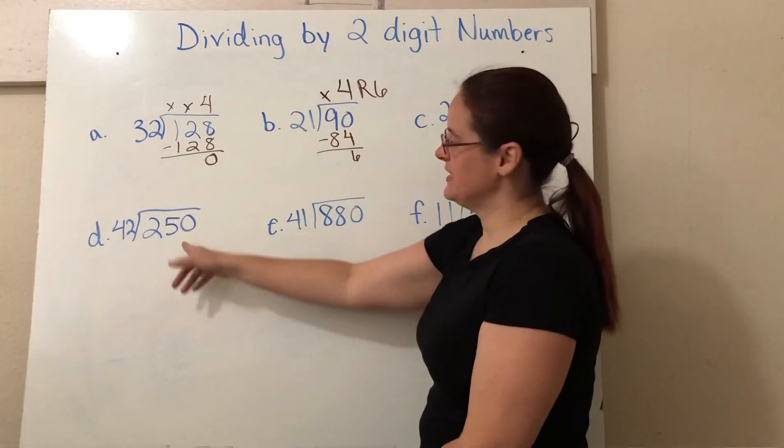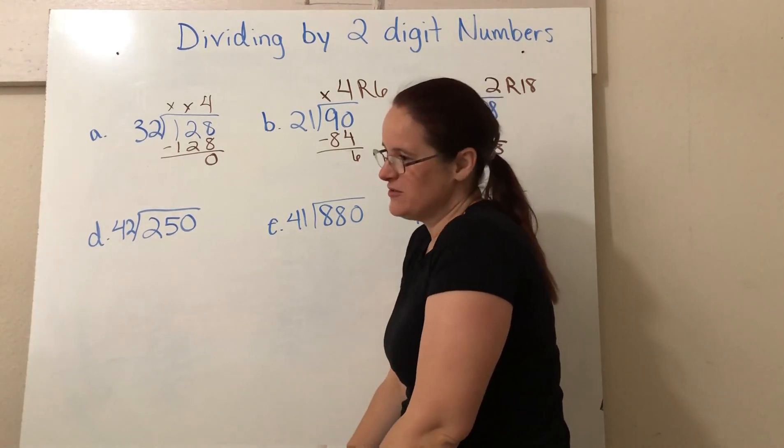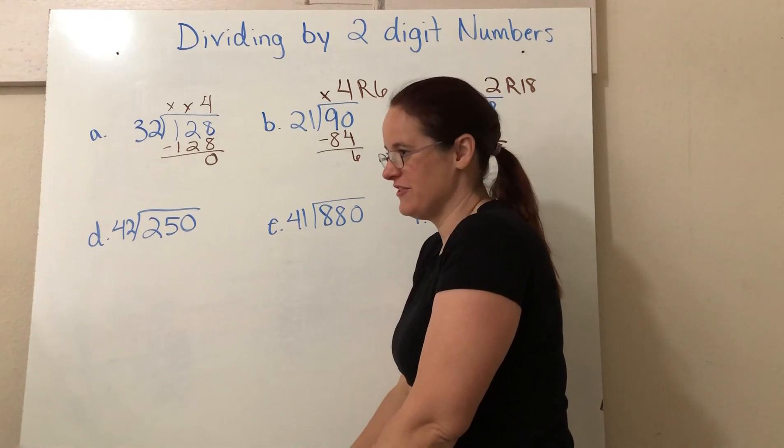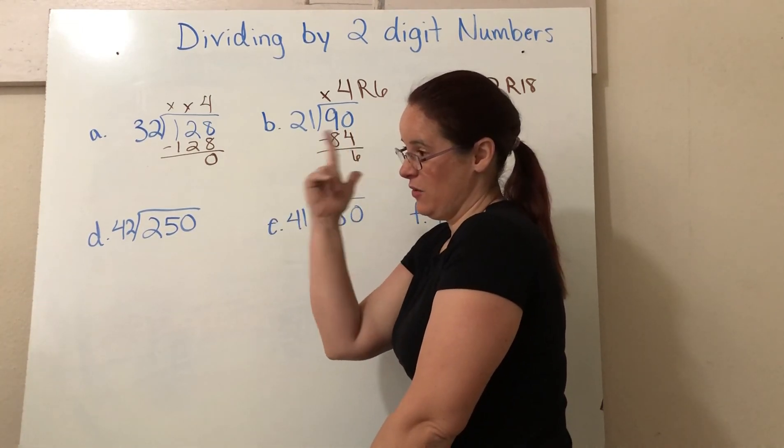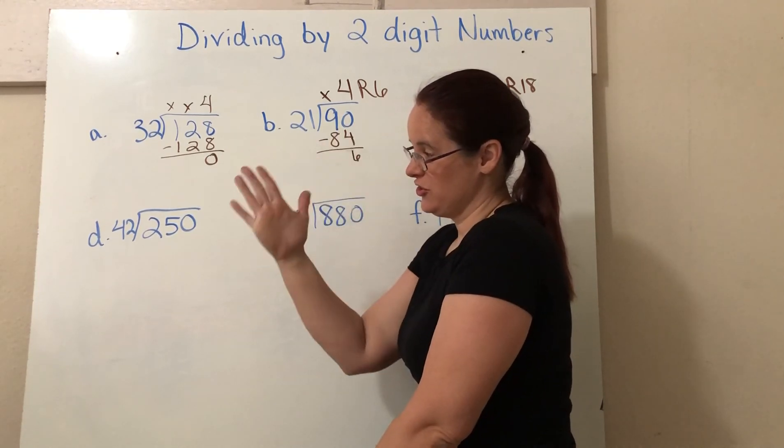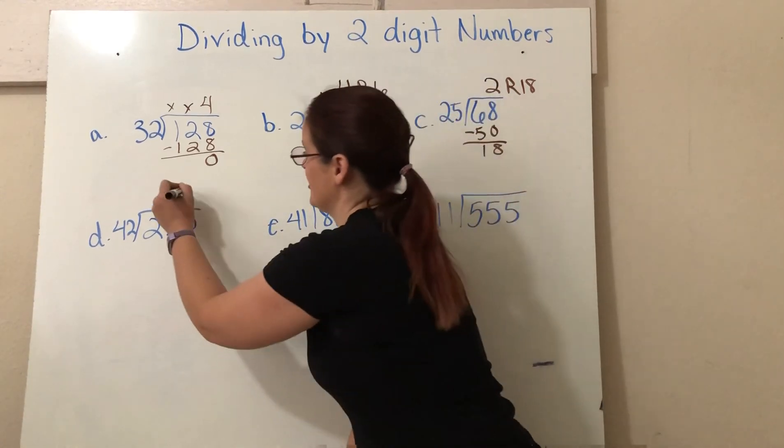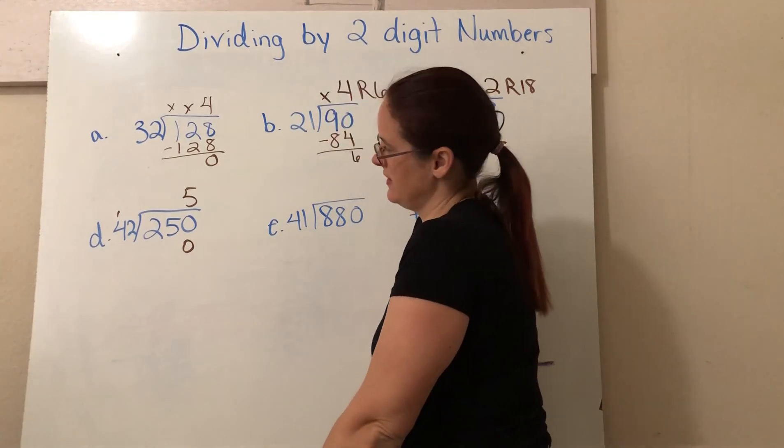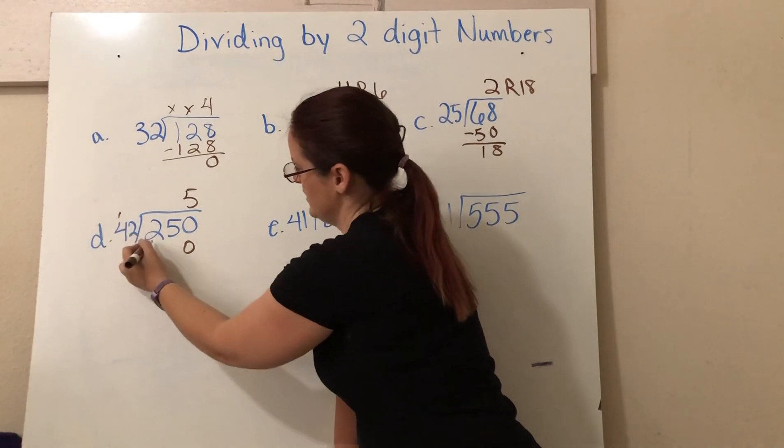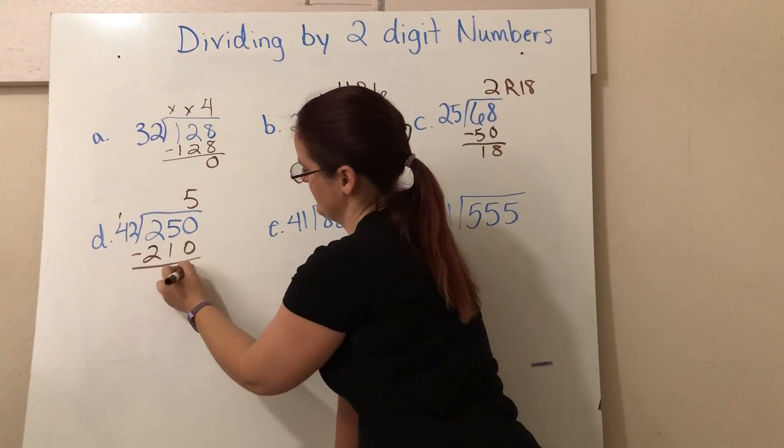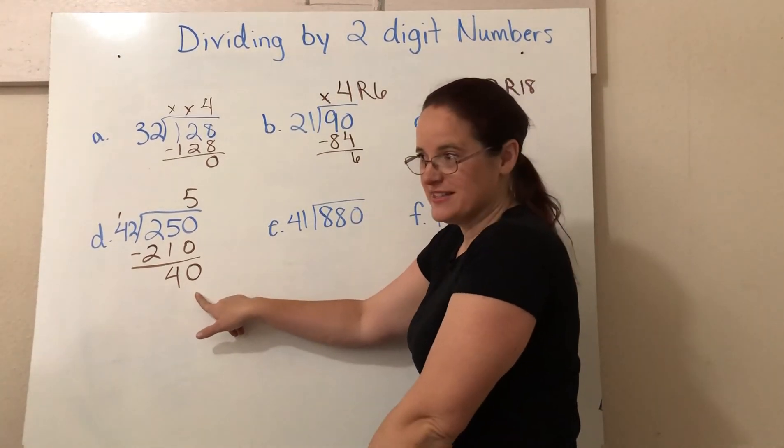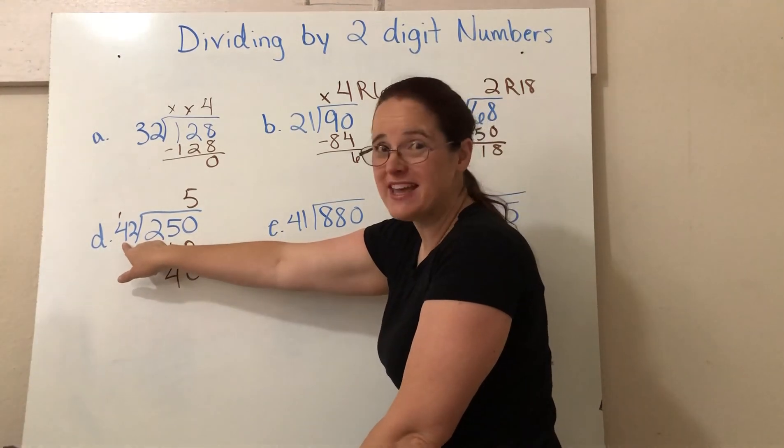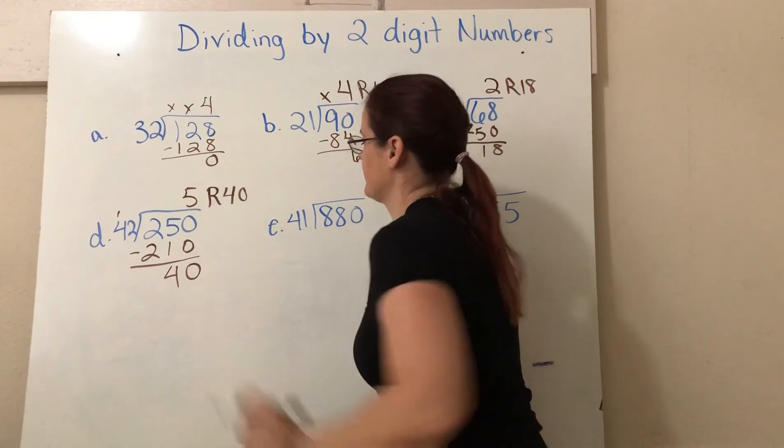Okay. This one. 42 into 250. This kind of thing is where we might use compatible numbers because 42 isn't that far away from 50. How many times does 50 go into 250? We could count. 50, 100, 150, 200. So five is a good place to start. What's five times two? Five times two is 10. Five times four? Is 20. Plus one? 21. And then we subtract. Zero. Look how big that remainder is. But compare it to your divisor. This remainder is still smaller than the divisor. So we're right. We can't make another group of 42. So five, remainder 40.